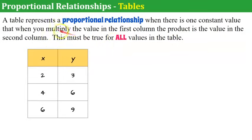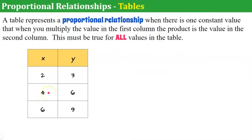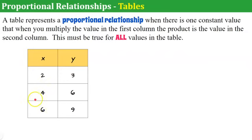Here's a table that represents a proportional relationship. A ratio table is also proven to be a proportional relationship if the cross products of any two rows are equal. So 2 times 6 is 12 and 3 times 4 is 12. 4 times 9 is 36 and 6 times 6 is 36. Also, 2 times 9 is 18 and 6 times 3 is 18.